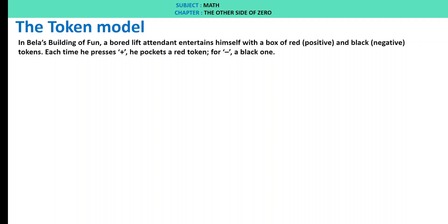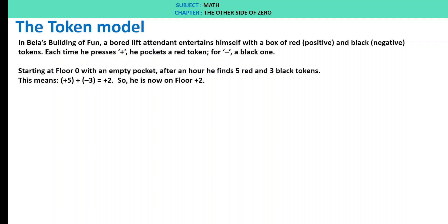The token model. In Baylor's building of one, a board lift attendant entertains himself with a box of red and black tokens. Red indicates positive tokens and black indicates negative tokens. Each time he presses plus, he pockets a red token; for minus, he pockets a black one. Starting at floor 0 with an empty pocket, after an hour he finds 5 red and 3 black tokens. This means plus 5 and plus of minus 3 equals plus 2. Now he is on floor plus 2.